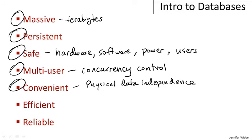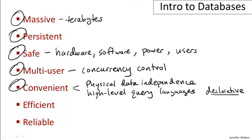Somewhat related to that is the notion of high-level query languages. Databases are usually queried by languages that are relatively compact and describe at a very high level what information you want from the database. Specifically, they obey a notion called declarative. Declarative means that in the query you describe what you want out of the database, but you don't need to describe the algorithm to get the data out. That's a really nice feature — it allows you to write queries in a very simple way and then the system itself will find the algorithm to get that data out efficiently.